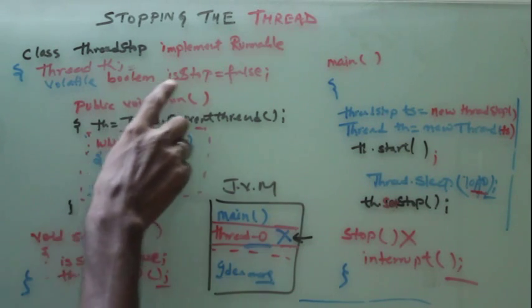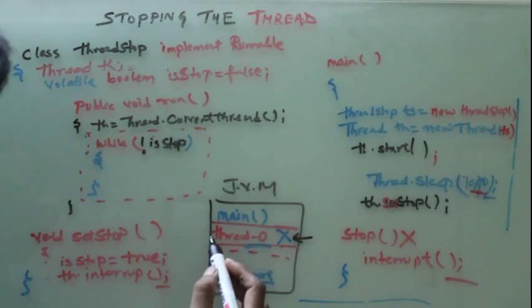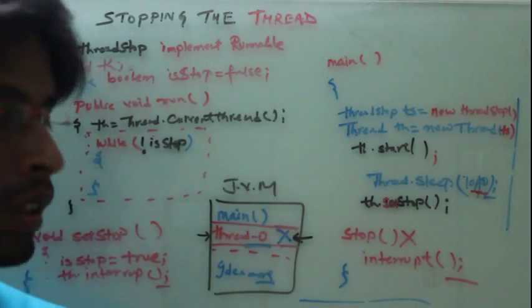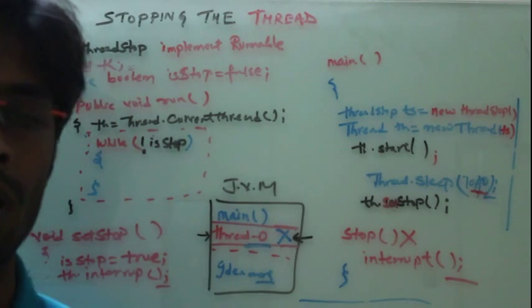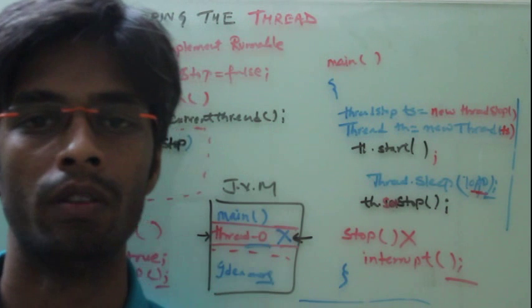So using the volatile variable and thread interrupt mechanism, we can successfully stop this thread. So this is the most graceful shutdown doing programmatically. Thanks for watching the video.